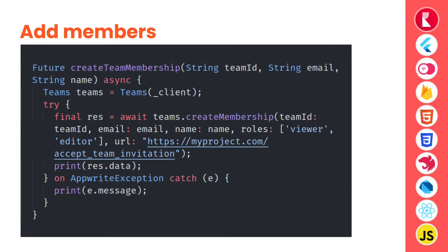To add new members, we can call create membership on the teams service. We pass in the team ID, the email of the new user we want to invite, an optional name to assign to the user, and optional roles like viewer or editor — we can assign any role, even owner if we want. Finally, we pass the URL of our application that will handle the invitation acceptance.